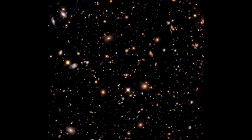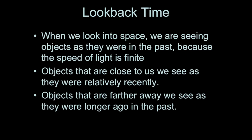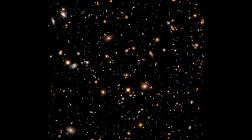This brings us to an important idea in astronomy called look-back time. Look-back time is the idea that when you look out into space, you're seeing objects as they were in the past. For example, the galaxies in the Hubble Ultra Deep Field are 9 or 10 billion light years away. The light I'm receiving from them now started its journey 9 or 10 billion years ago — so I'm seeing those galaxies as they were 9 or 10 billion years ago.